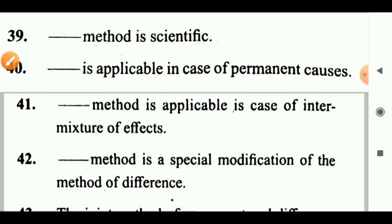Question 56: The joint method is called a method of dash agreement. Answer: Double. Question 57: Graphic method is known as dash method. Answer: The method of concomitant variation. Question 58: Heat and friction are not applicable to dash. Answer: The method of difference. Question 60: Non-sequitur literally means dash. Answer: It does not follow.